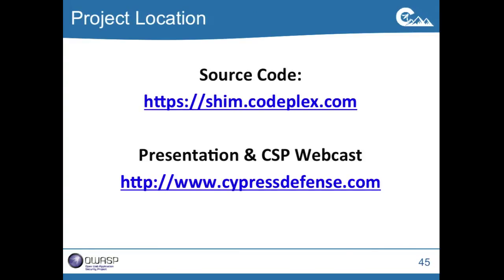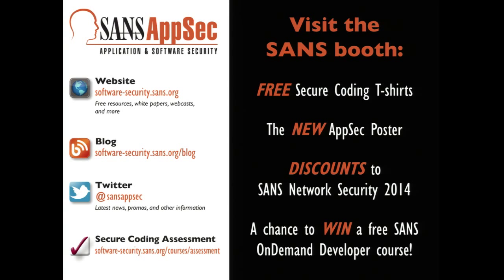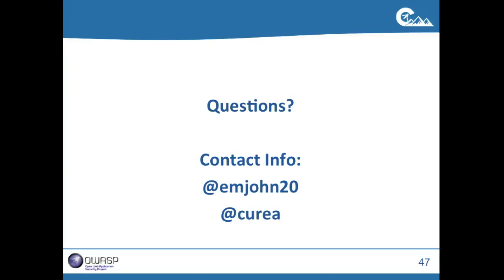If you want to go get the code, it's on shim.codeplex.net. If you want this presentation or to look at the CSP webcast, it's on our website, cypressdefense.com — just hit the blog and you can see all those on there. We also have the SANS AppSec booth right outside the door — they're giving away t-shirts, cool posters, and discounts for the upcoming Network Security event. Any questions? Contact info is on there.